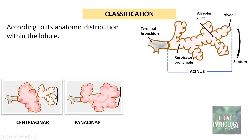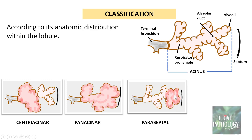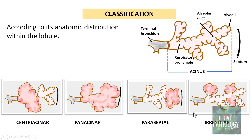In panacinar emphysema, the entire acinus is dilated. The third category is paraseptal emphysema, where the distal-most part of the respiratory tree is dilated, very next to the septum — that's why it's called paraseptal. The last type is irregular emphysema, which is neither central nor panacinar nor paraseptal; it is haphazardly distributed.